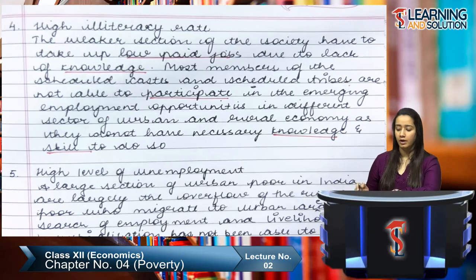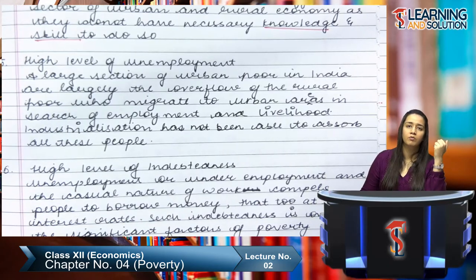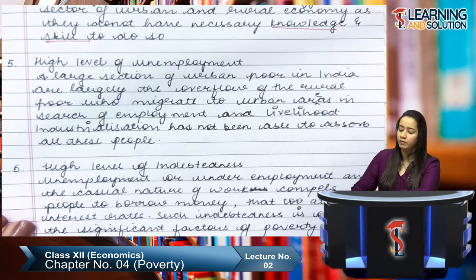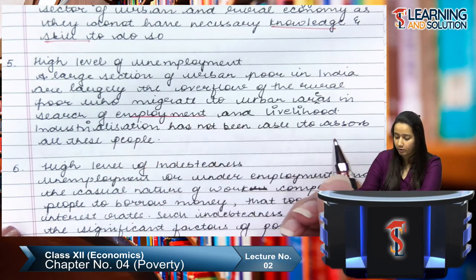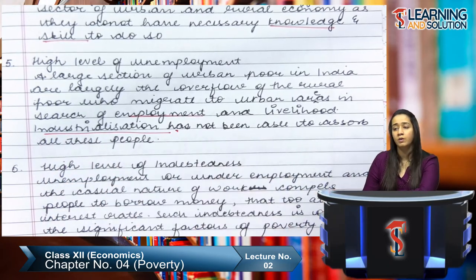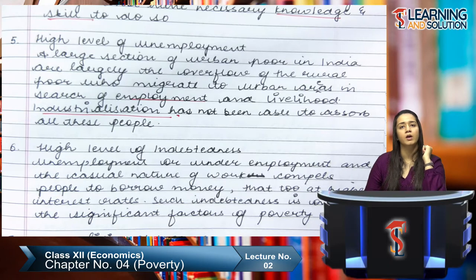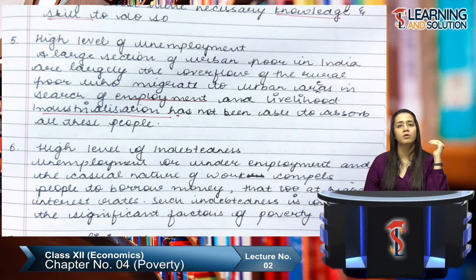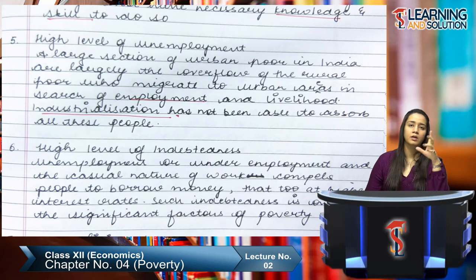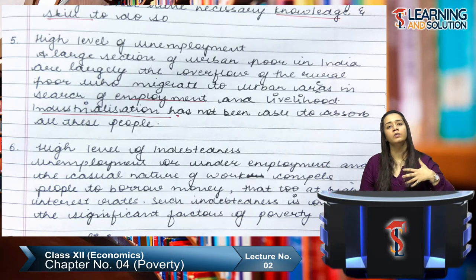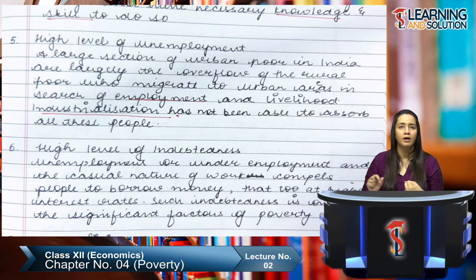Fifth is high level of unemployment. Because they are not educated and not skilled, they don't get enough employment opportunities. A large section of the urban poor in India are largely the overflow of the rural poor who migrate to urban areas in search of employment. Industrialization has not been able to absorb all these people, so at the end they end up doing rickshaw-pulling or similar low-wage work.